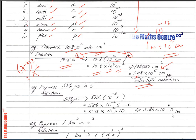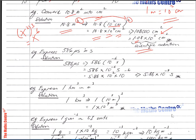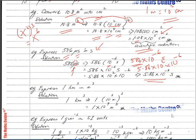Next, express 586 microseconds in seconds. Replace micro with 10⁻⁶, giving 586 × 10⁻⁶ seconds. Writing 586 in scientific notation: 5.86 × 10². So we have 5.86 × 10² × 10⁻⁶ = 5.86 × 10⁻⁴ seconds.